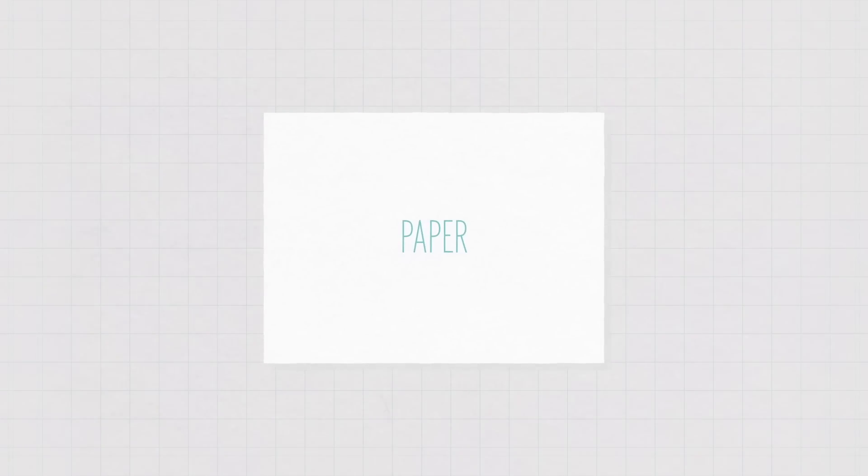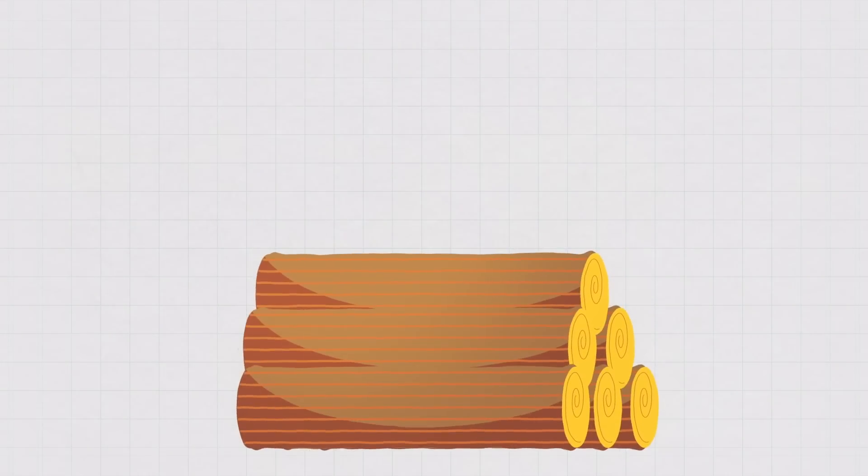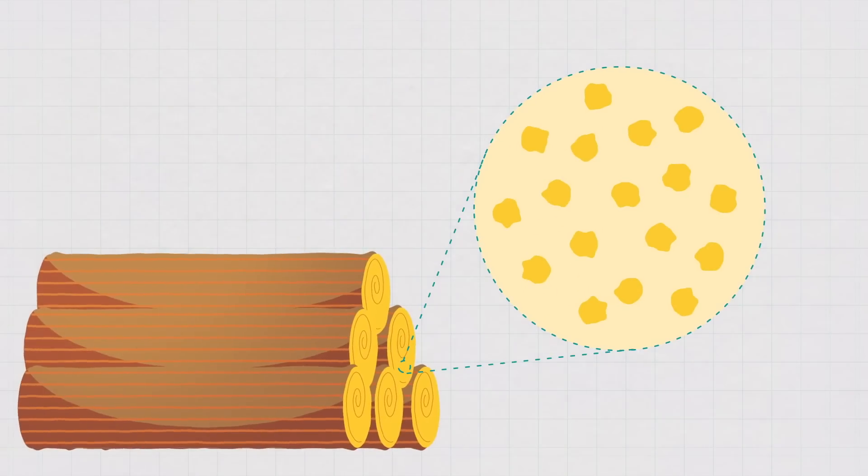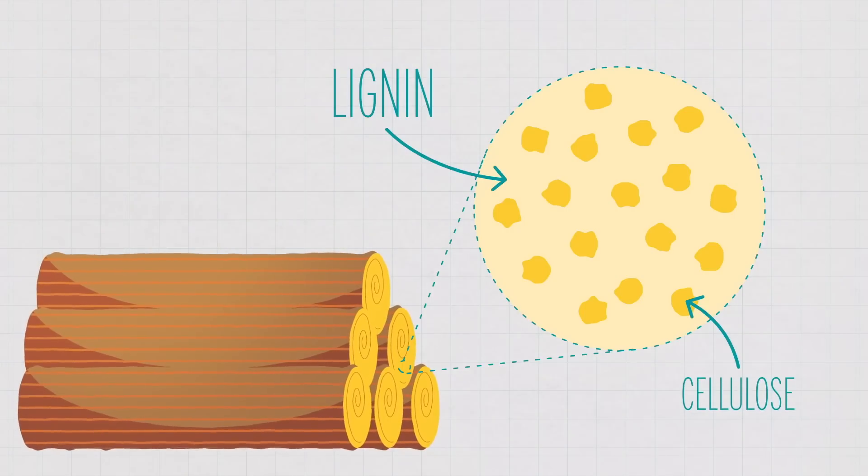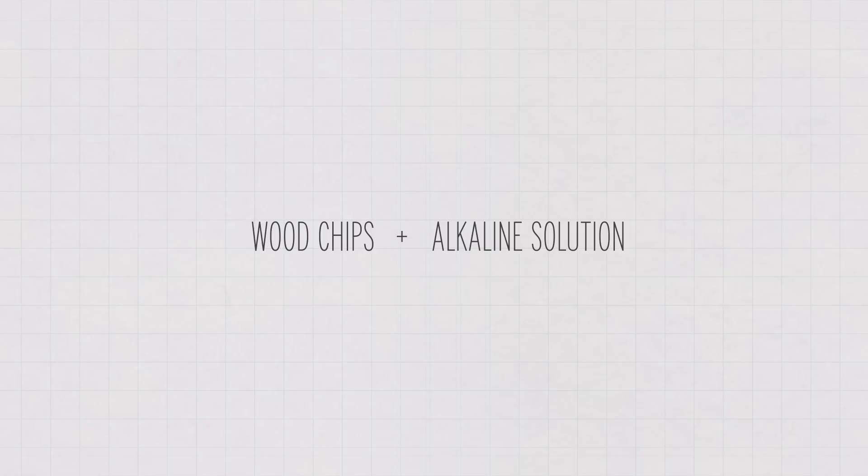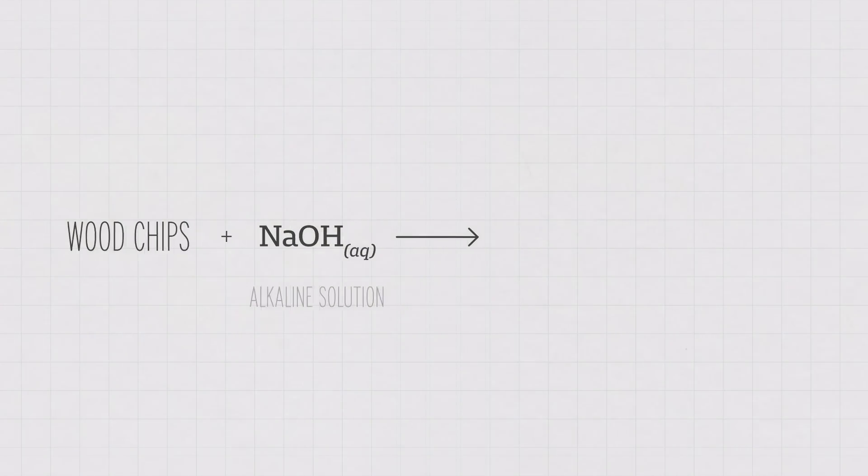But paper is actually a bit more complicated than that. In wood, the cellulose molecules are all bound together with another polymer molecule called lignin, which acts like a glue holding the cellulose together. So you have to get rid of the lignin to get to the cellulose. To do this, the wood chips are first soaked in an alkaline solution, which breaks down the lignin, helping to release the cellulose fibers. And the longer the cellulose fibers, the stronger the paper.